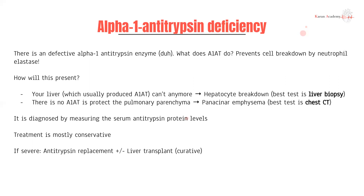It's going to affect all of the acini, versus smoking-induced emphysema which is most centrally located and doesn't affect all acini as consistently. The best test to assess for that is a CT of the chest. It is diagnosed by measuring serum antitrypsin protein levels; you can also do electrophoresis. Treatment is mostly conservative, but if serum antitrypsin falls below a certain threshold you can replace the enzyme. In most cases it's conservative until the liver starts failing, at which point a liver transplant is curative — because the transplanted liver has normal production capacity for alpha-1 antitrypsin.